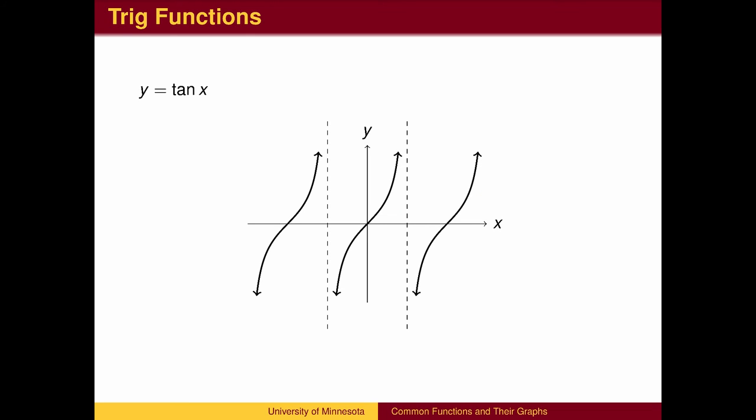The graph of y equals tangent of x has branches separated by asymptotes. The asymptotes occur at x equals pi over 2, 3 pi over 2, etc., both to the right and the left of the y-axis. The graph passes through the origin, the point (pi over 4, 1), and the point (negative pi over 4, negative 1). The tangent graph then repeats every pi.